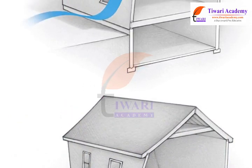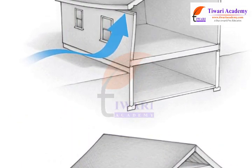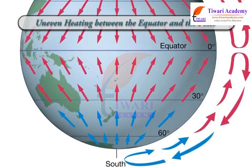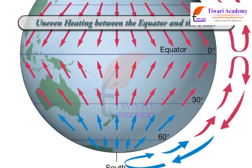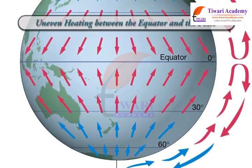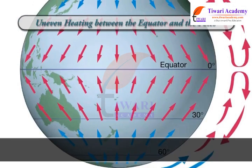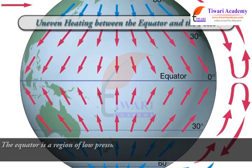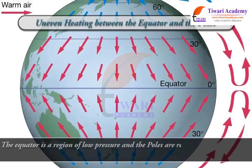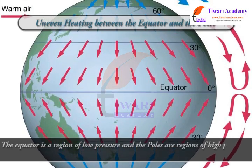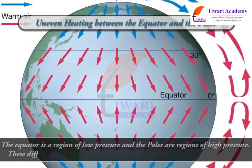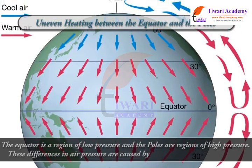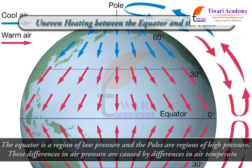Wind currents are generated in the following situations. First, uneven heating between the equator and the poles. The equator is a region of low pressure and the poles are regions of high pressure. These differences in air pressure are caused by differences in air temperature.